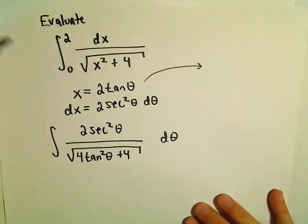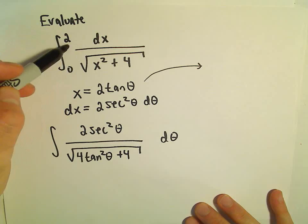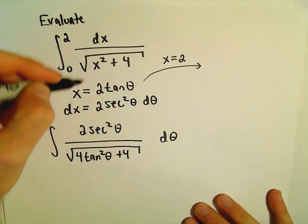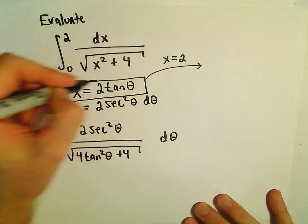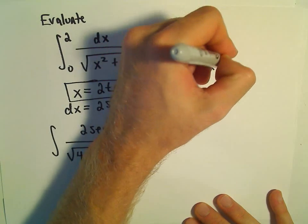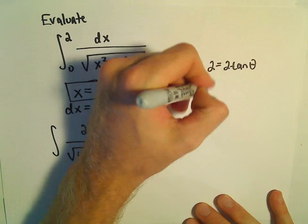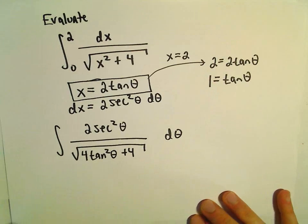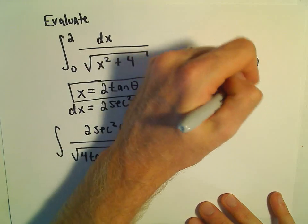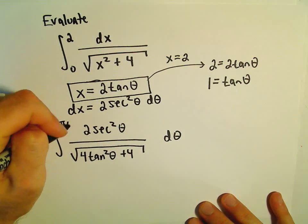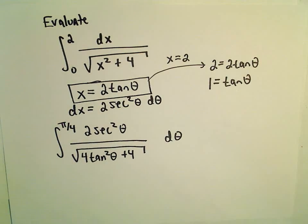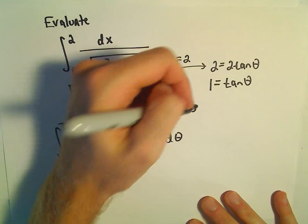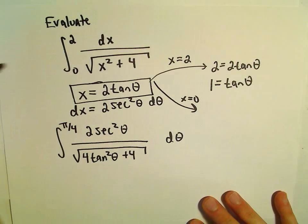To get our new limits of integration, the upper limit was when x = 2. If we plug in x = 2 into our substitution, we'll have 2 = 2tan(θ). Dividing both sides by 2, we get tan(θ) = 1, and tan(π/4) equals 1, so our upper limit of integration becomes π/4.